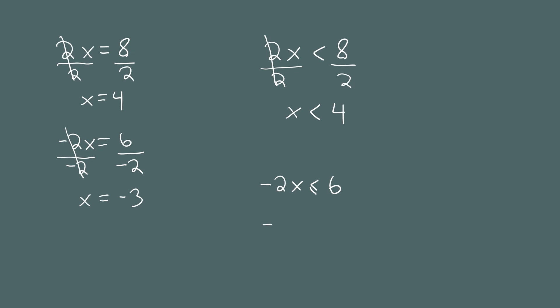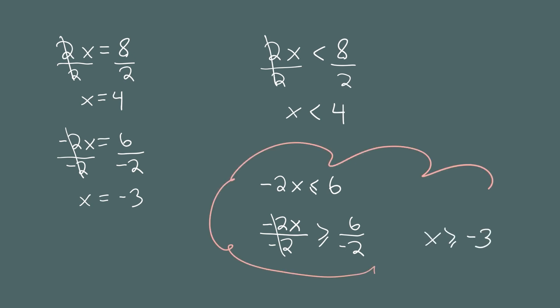So if we divide both sides by negative 2, we're dividing by a negative, so we have to flip the inequality symbol. They cancel on the left, and we have x is greater than or equal to negative 3. This is one of the big differences between inequalities and equations: if you're multiplying or dividing both sides by a negative number, you have to flip the symbol.